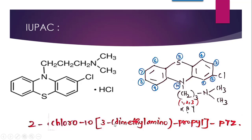According to alphabetical order, chlorine (C) comes first, so it is written first at the second position — 2-chloro. At the 10th position there is the primary chain — propyl, a 3-carbon chain CH₂CH₂CH₂ — and at the third carbon, dimethylamino is present. So it is written as 3-(dimethylamino)propyl, and the root name is phenothiazine. The structure along with the numbering has been explained; it is very simple.